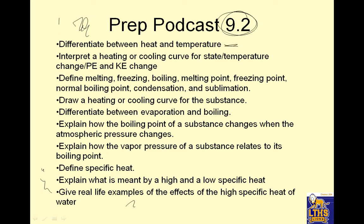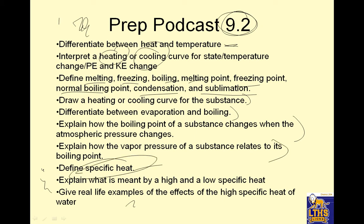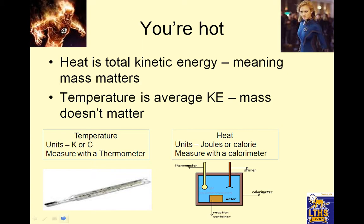We're going to differentiate between heat and temperature, interpret a heating and cooling curve, and talk about melting, freezing, boiling, melting point, freezing point, normal boiling point, condensation, sublimation, and evaporation. We'll draw a heating curve, differentiate between evaporation and boiling, explain how boiling point changes with atmospheric pressure, explain how vapor pressure relates to boiling point, and define specific heat — explaining what is meant by high and low specific heat. Let's get started.